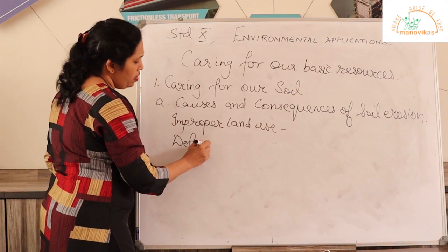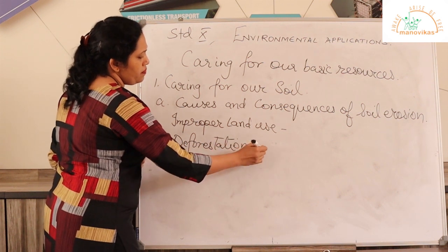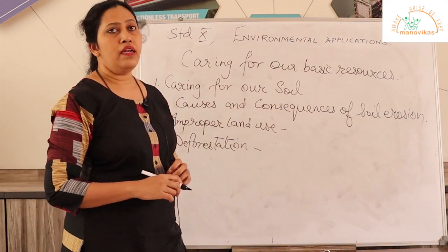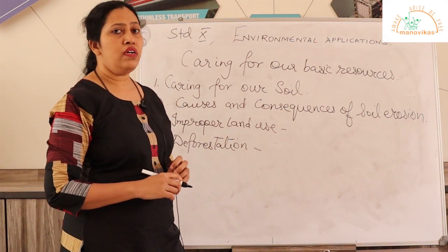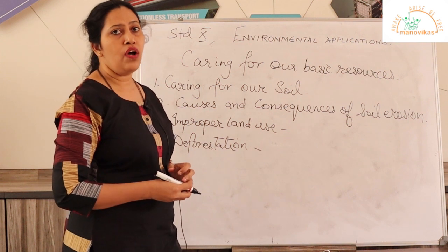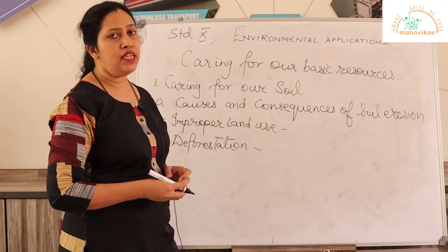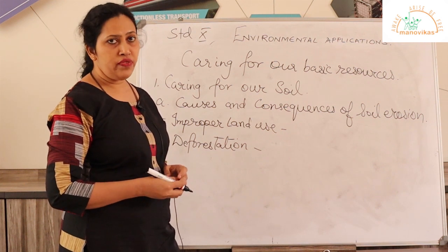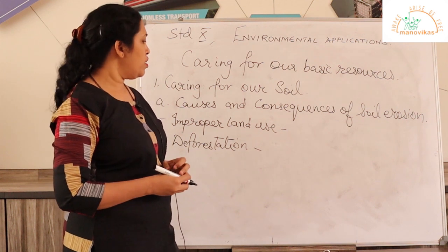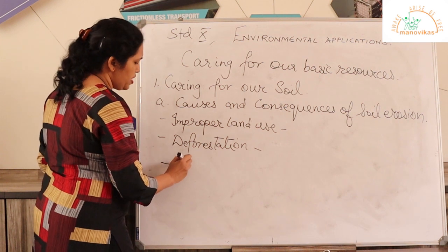The second cause is deforestation, or felling of trees. Deforestation is caused because land is used for the same purposes like building construction sites, roads, railways, and more land is used for settlements and illegal mining. All these activities require cutting down trees, and this is a main cause of soil erosion. The third cause is overgrazing.